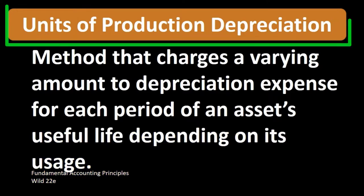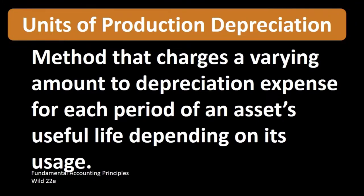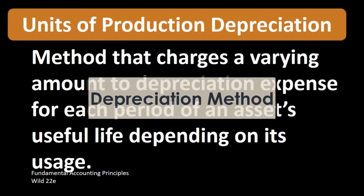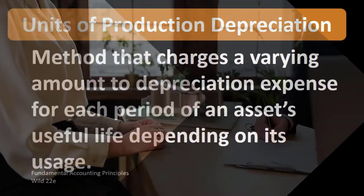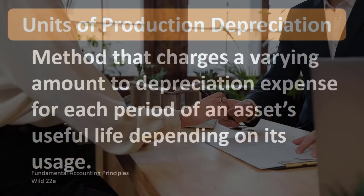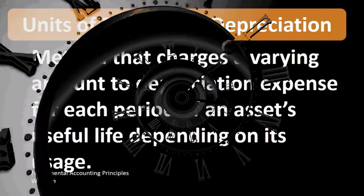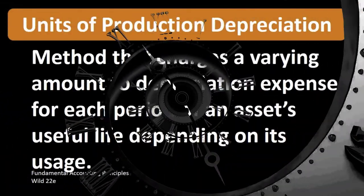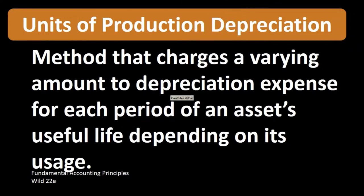When we're talking about units of production, we are talking about a depreciation method being applied to property, plant, and equipment — longer-lived tangible assets that we need to allocate the cost of over time, over the useful life, in accordance with the accrual principle and the matching principle. When we think about depreciation, we usually compare it to the baseline method, that being the straight-line method.